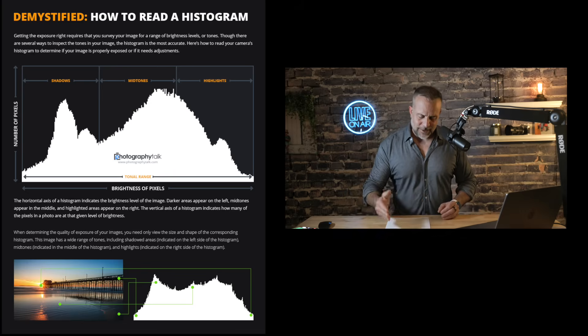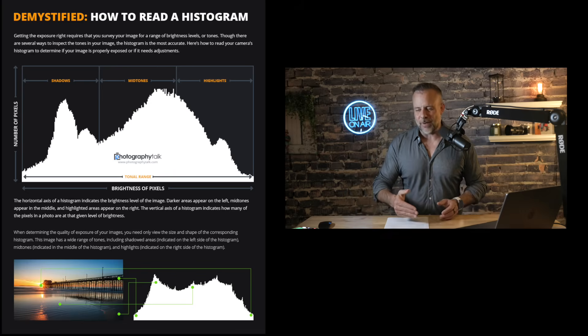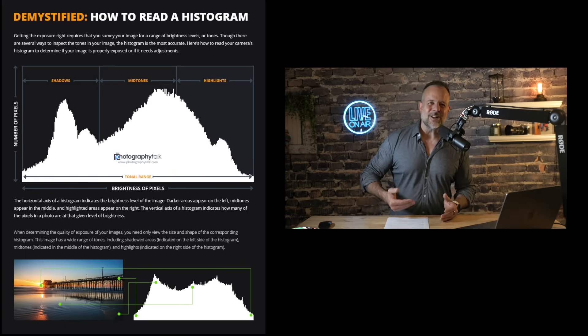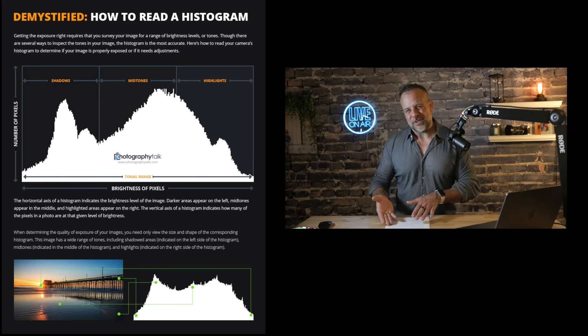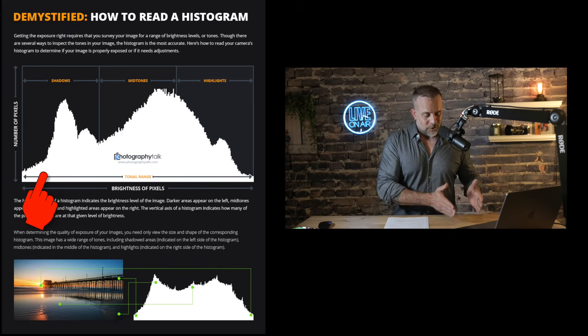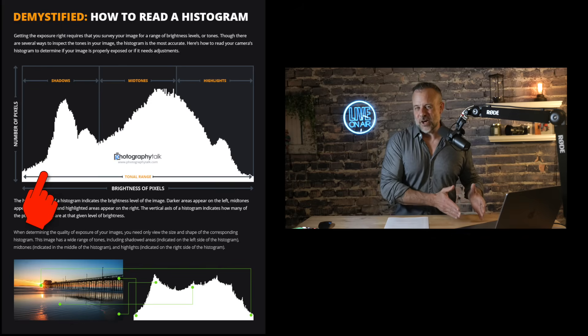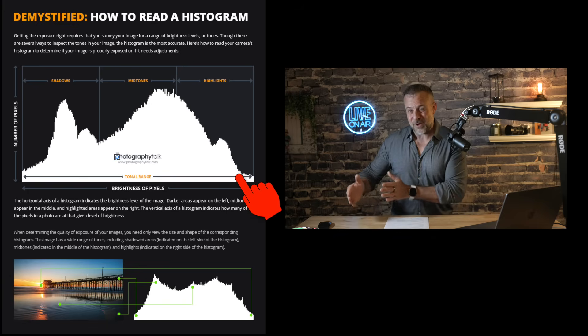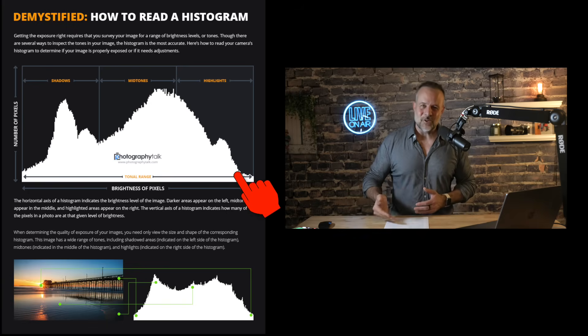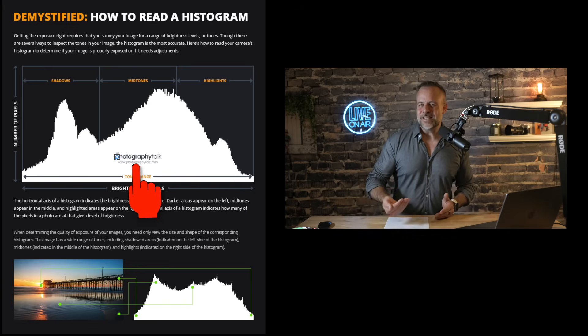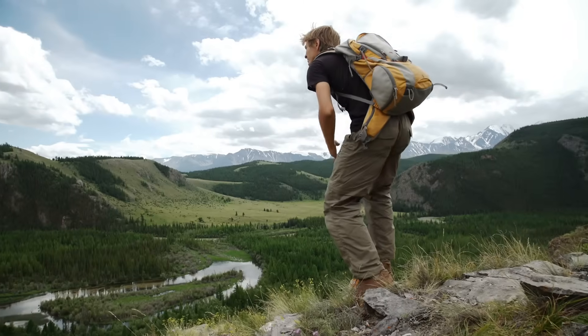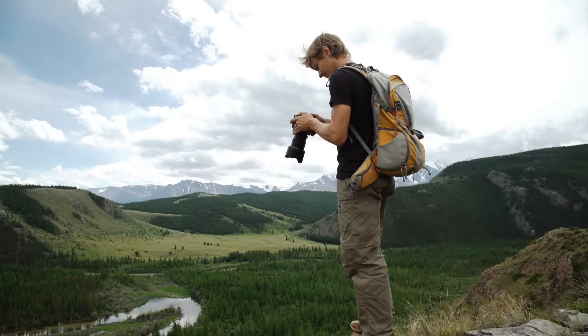So what exactly is a histogram? Simply put, it's a graph that shows you the brightness levels in your photo. The left side represents shadows and dark tones, the right side represents highlights and bright tones, and right in the middle are the mid tones. By checking your histogram you can immediately see if your image is underexposed, overexposed, or just right — even if the preview on your screen looks misleading due to lighting conditions.